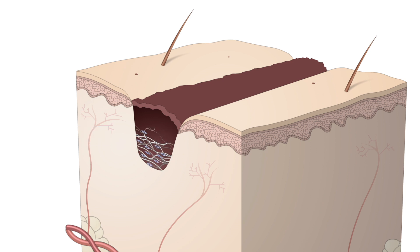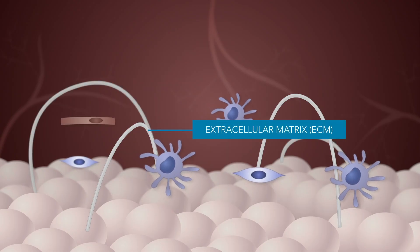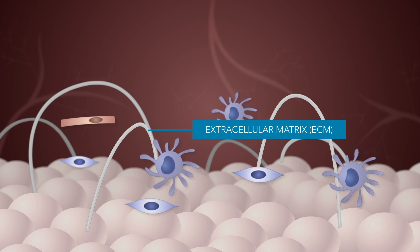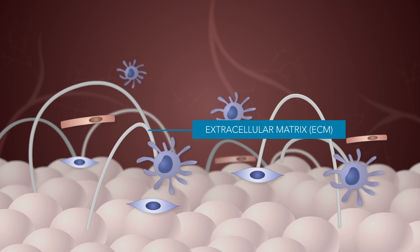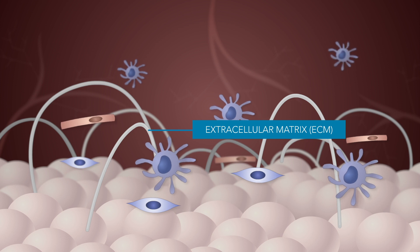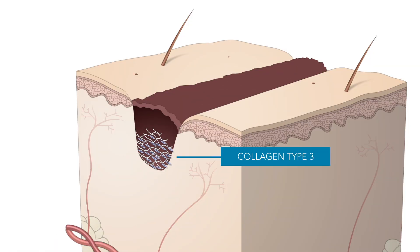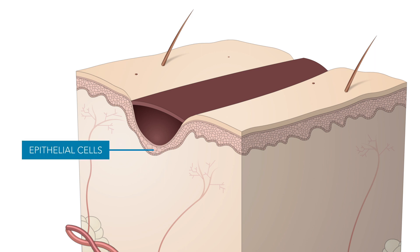In fibroplasia and granulation tissue formation, fibroblasts grow and form a new provisional extracellular matrix (ECM) by excreting collagen and fibronectin. Re-epithelialization of the epidermis occurs, whereby epithelial cells proliferate and crawl atop the wound bed, covering the new tissue.